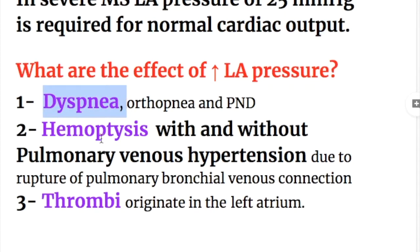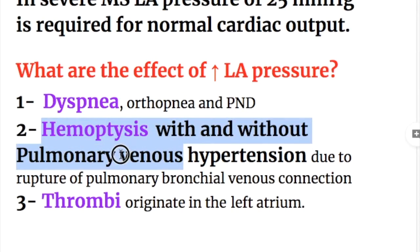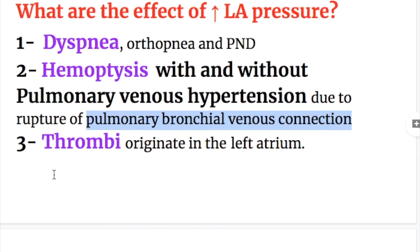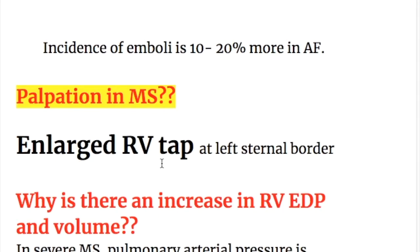Number one: dyspnea, and in severe cases, orthopnea and paroxysmal nocturnal dyspnea. Number two: hemoptysis, with and without pulmonary hypertension, due to rupture of pulmonary bronchial venous connections. Number three: thrombi originating in the left atrium, with an incidence of emboli of 10 to 20% higher in atrial fibrillation.